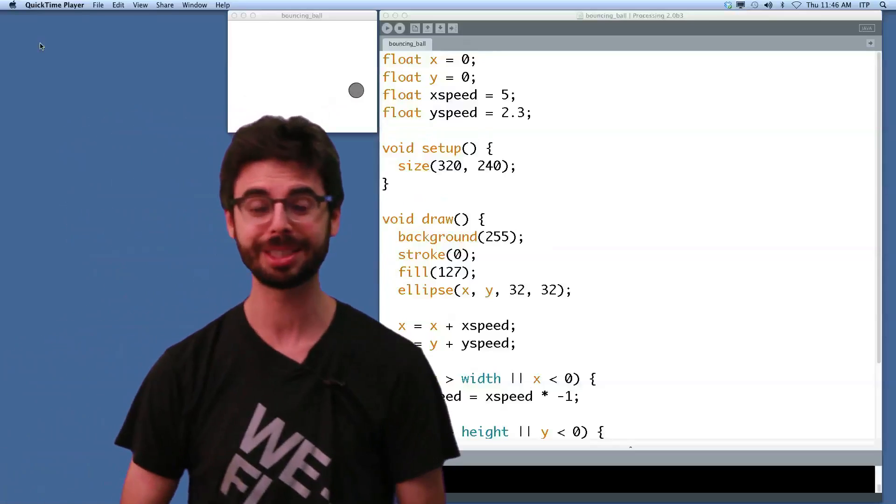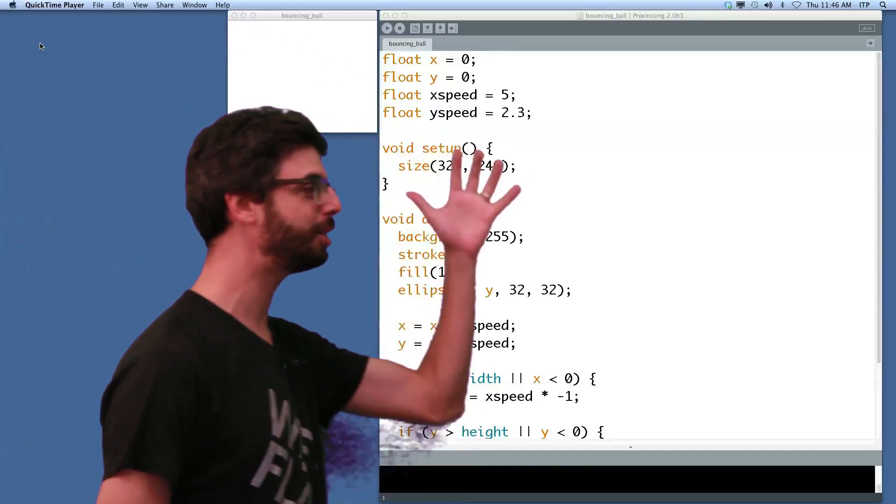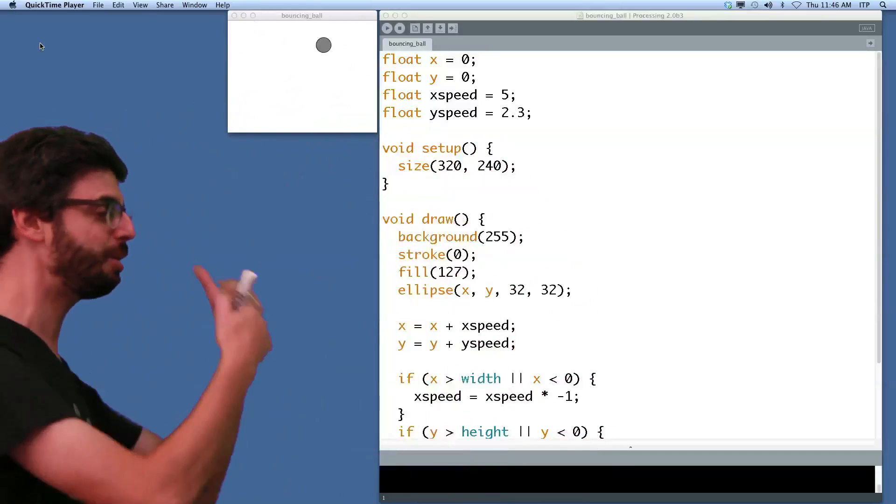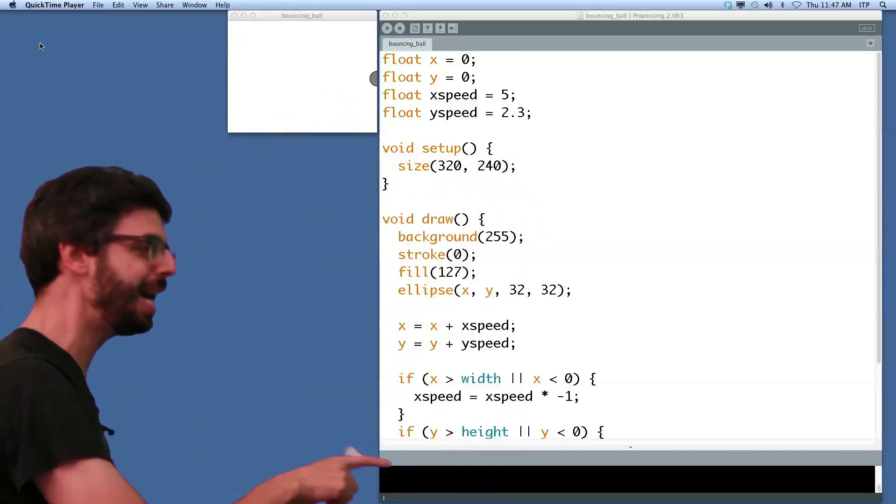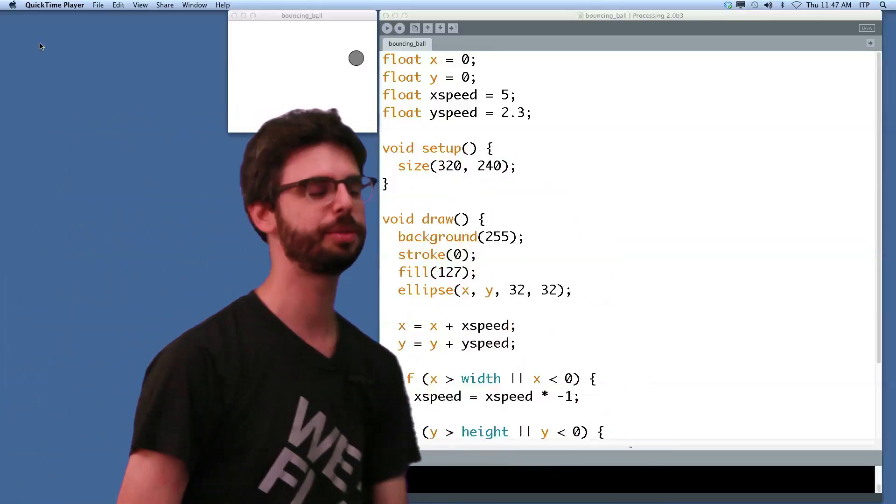Over here we have a simple bouncing ball sketch. This is one of the basic things we've written in processing. We have an X and Y variable, an X speed, a Y speed. The ball is bouncing around. It increments by its speed every frame. It's drawn as a circle.